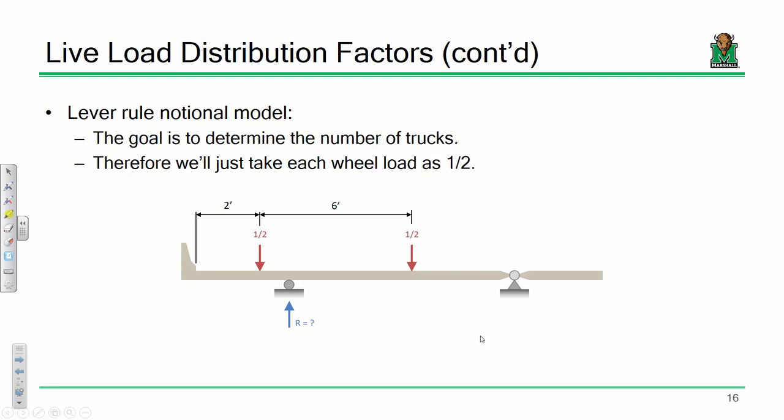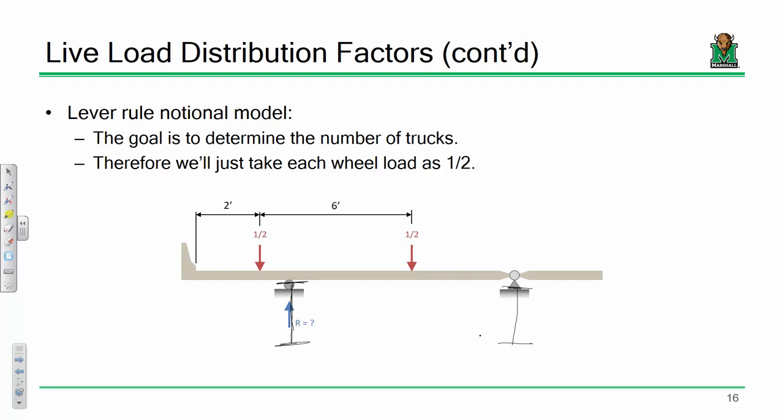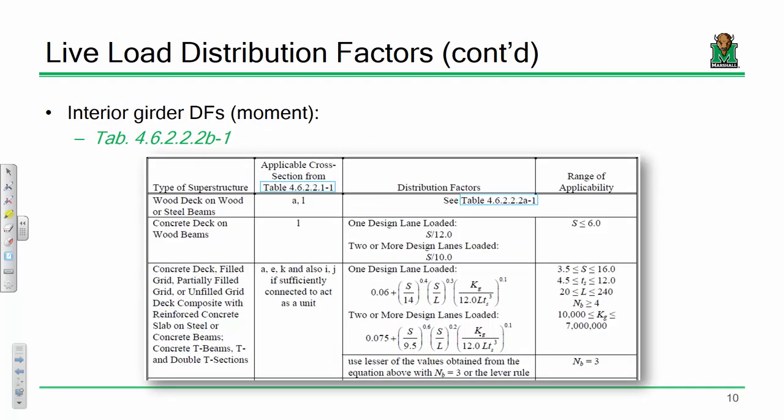With the lever rule, we assume the slab acts as a beam with an internal hinge at one support and a roller at another. We put half the truck load on each side, sum moments, and determine how much reaction the exterior girder needs to carry. That reaction is essentially your distribution factor. For a jersey barrier or similar element down the middle, you distribute that load to the nearest girders as appropriate.